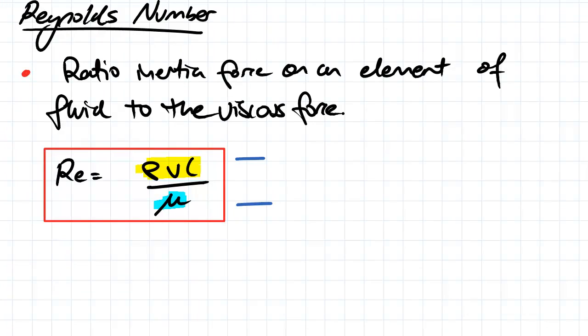Another way to describe Reynolds number is that it's the ratio of the inertia force on an element of a fluid to the viscous force. So you can see here, this top portion here, that's what we call the inertia forces.